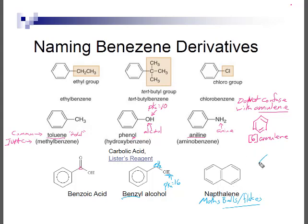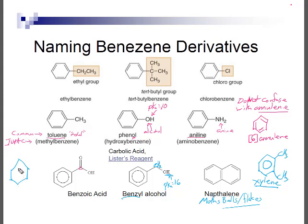One other compound to know is xylene. Toluene has one methyl group; if we have two methyl groups, it's a xylene. Those two methyl groups could be on adjacent carbons (1,2), 1,3 positions, or 1,4 positions. And if we had a combination of a phenol and a methyl group on the ring, that compound is called a cresol, which can also be in 1,2, 1,3, or 1,4 arrangements. We'll talk more about naming disubstituted benzene derivatives next.